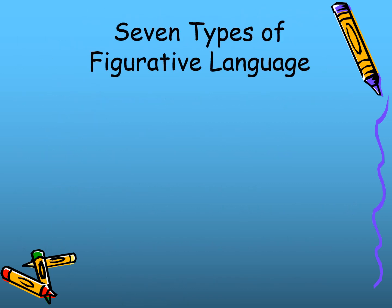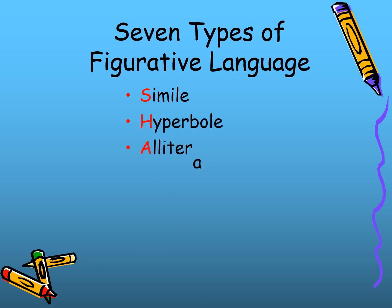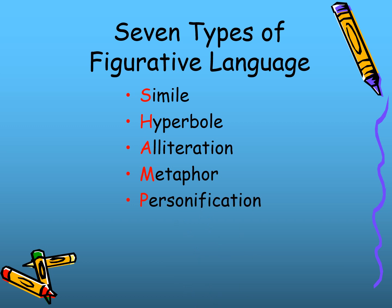Now we are going to look at the seven types of figurative language. First, we have simile, hyperbole, alliteration, metaphor, personification, onomatopoeia, and oxymoron.